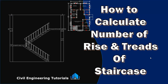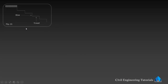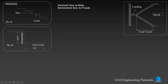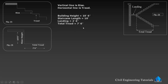Staircase length minus landing gives us the total tread. Now looking at the section of the staircase — the vertical line is the rise and the horizontal line is the tread. This is the landing, and from here to here is the total tread. Riser height is 10 feet and 6 inches, and the total tread is 7 feet and 6 inches.